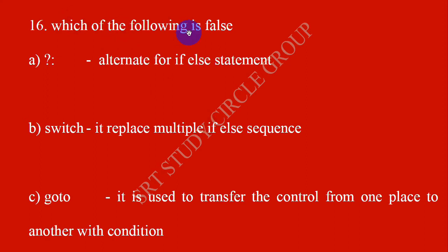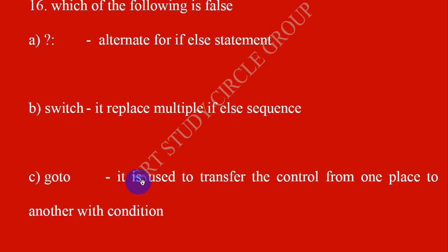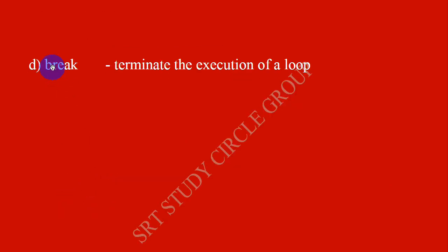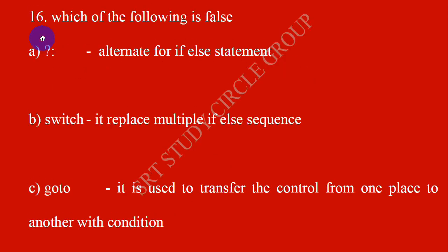Which of the following is false? The conditional operator is the alternate for the if-else statement. Switch will replace multiple if-else sequences. Go-to is used to transfer control from one place to another with a condition — that is wrong, go-to is not allowed with a condition, so that is false. The answer is C.